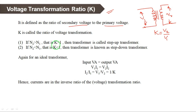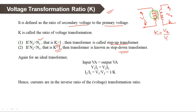If the K value is greater than 1, it is called a step-up transformer. If K is less than 1, it is called a step-down transformer. N1 and N2 are the number of turns in the primary winding and secondary winding respectively. N1 represents the primary turns and N2 represents the secondary turns.